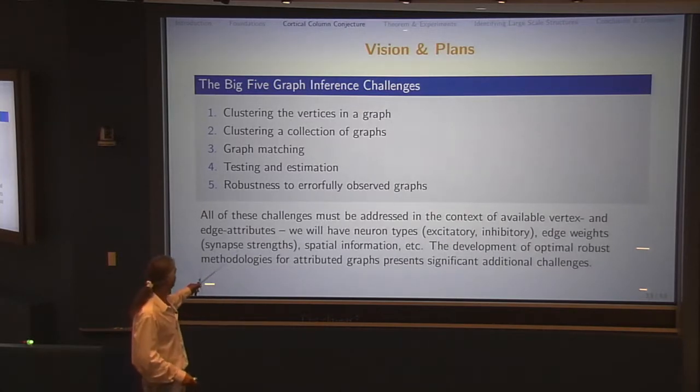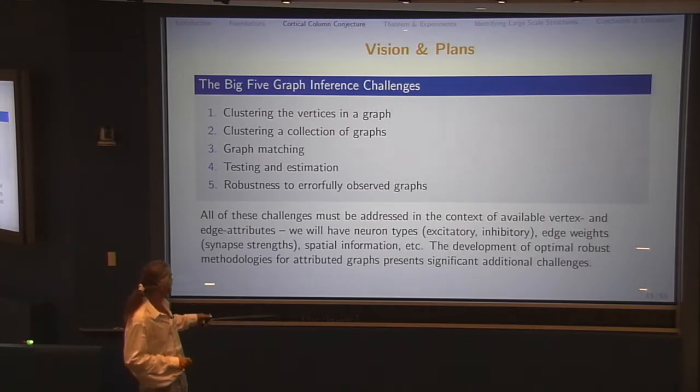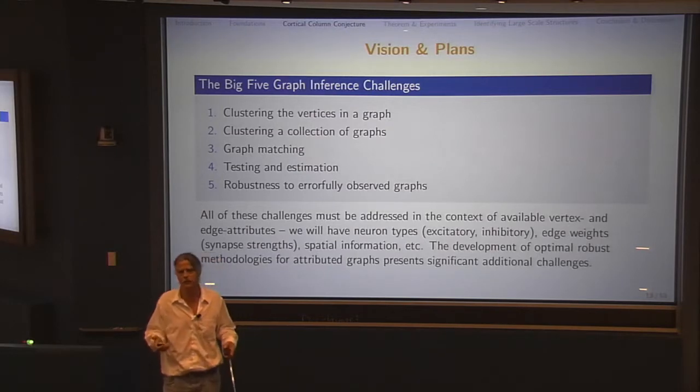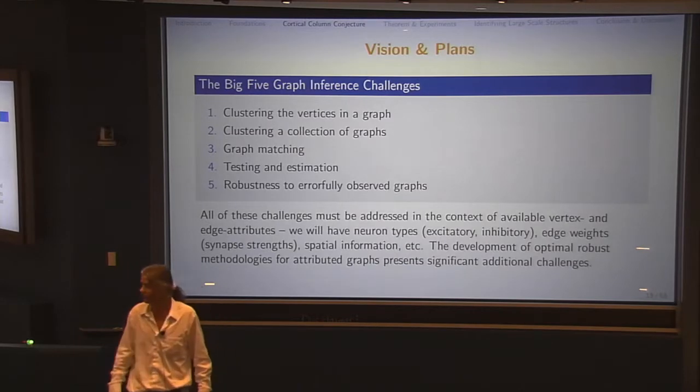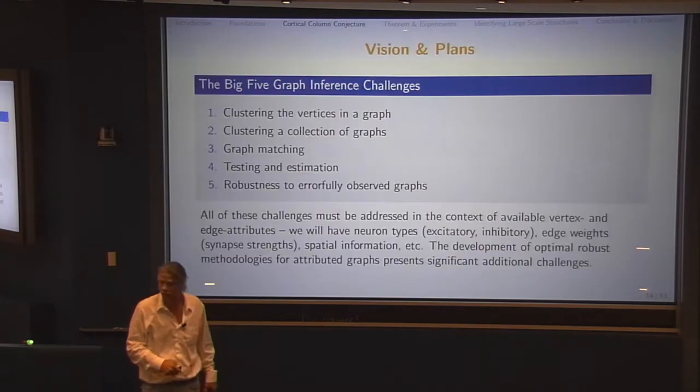What if we split neurons and we think there's two neurons there, but there's only one because of the image processing, or all sorts of different things. I said earlier that I want to understand the error properties of the observed graph. So I'd like to understand the error properties of the actual graph, the biology, where error there means variation. But I'd really like to understand the error properties of what we observe through the imaging followed by the computer vision. Because if those error properties, if what I really want to do is test the cortical column conjecture, I need to build methodologies that are robust to what I'm actually going to see.